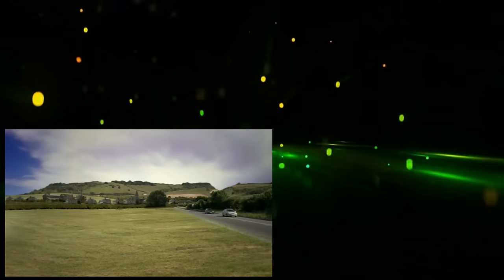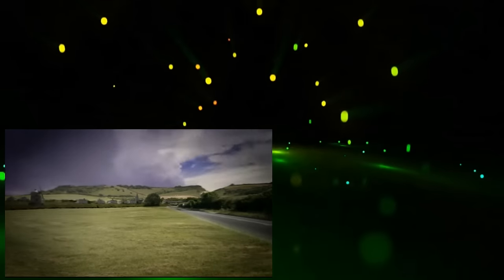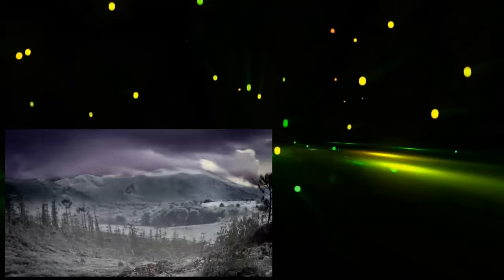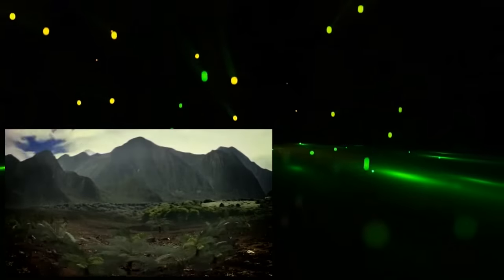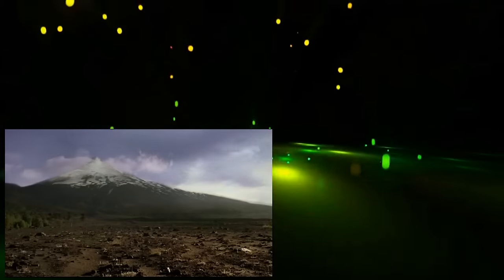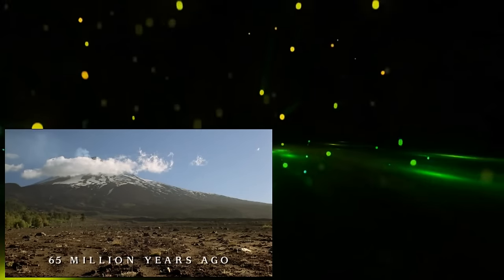Imagine you could travel back in time to a time long before man, back across 65 million years. As you travel, you would see huge changes in the vegetation and climate. Even the surface of the Earth itself would move as mountain ranges are pushed up by colliding continents. Now you've reached a remarkable period in Earth's history known as the Cretaceous.